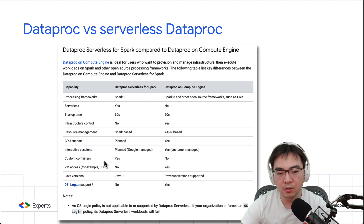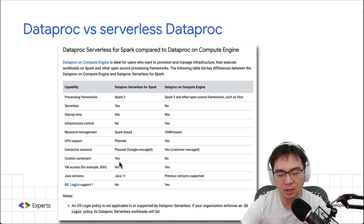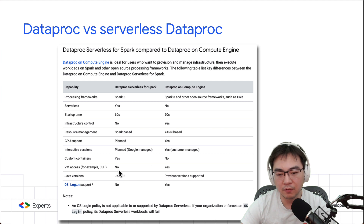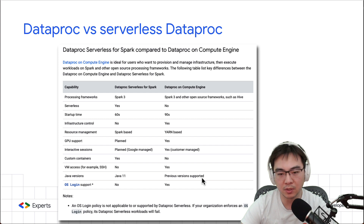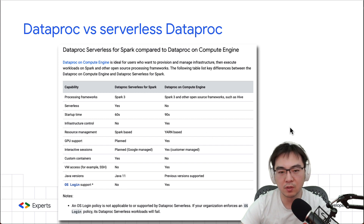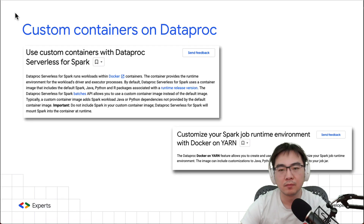Other differences are quite minor. Custom containers on regular Dataproc likely means using a container to create the base cluster, not necessarily the runtime container I'm talking about today. Java 11 is used in the serverless version, while earlier Java versions are supported in the Compute Engine version. OS logging is not supported in serverless. You can go through this in detail — it's hyperlinked so you can click it when I share the slides to find the full Google documentation.